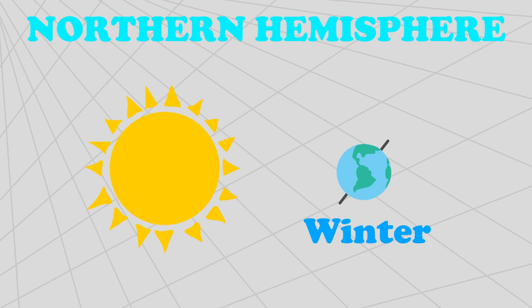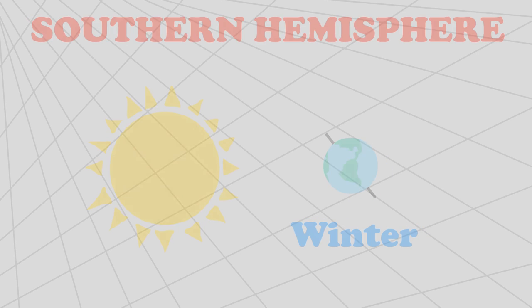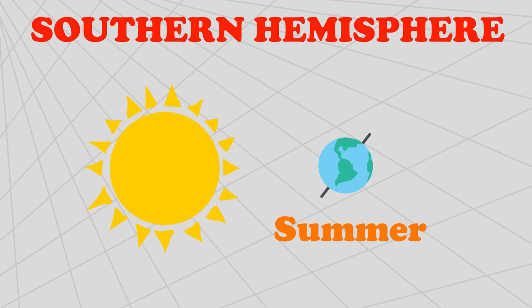For the southern hemisphere, the same factors are reversed. When the Earth's axis points towards the Sun it is winter. When the Earth's axis points away from the Sun it is summer. To understand this, here is an analogy that you can try for yourself.